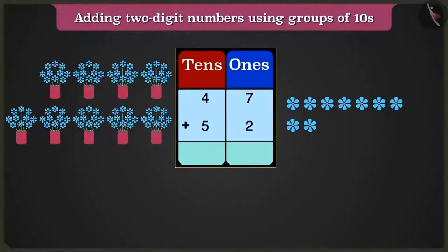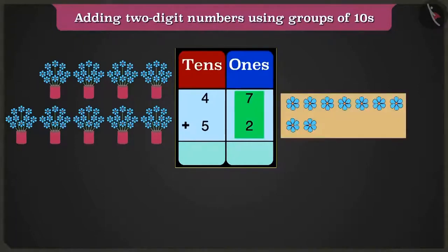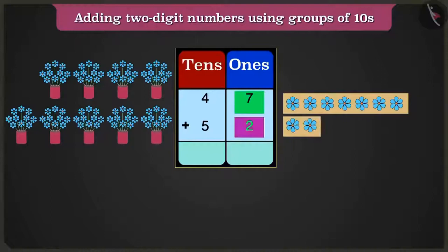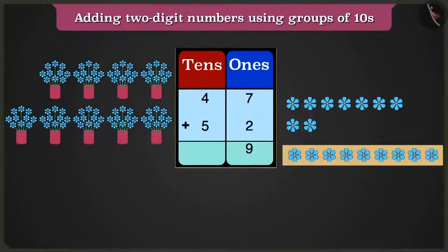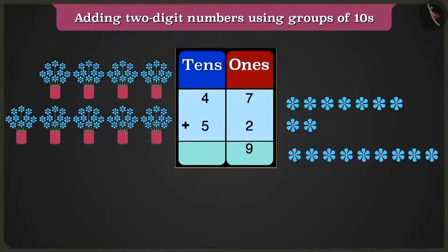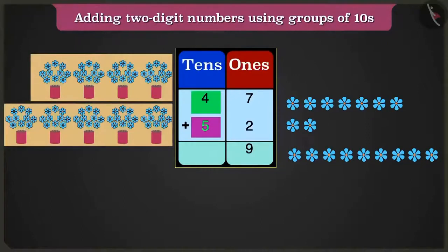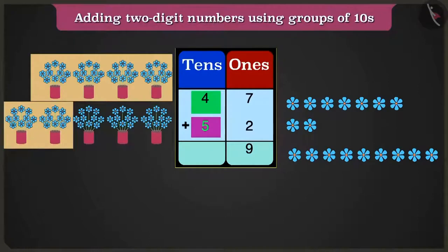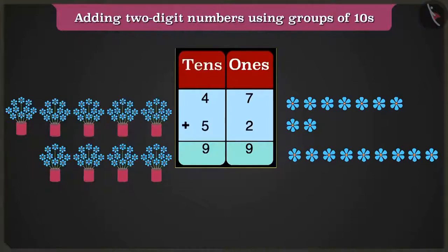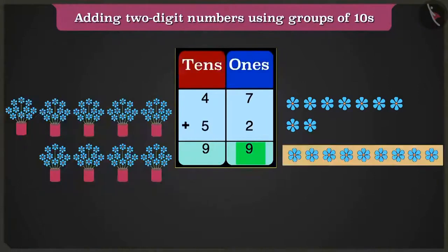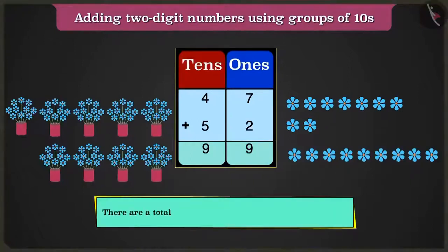Now we will first add the number in the ones box. We have to add seven ones and two ones. The count after seven is eight and nine. That is, seven ones plus two ones equal nine ones. Now in the box of tens, four added to five — count after four: five, six, seven, eight and nine is what we get. Hence, there are nine tens and nine ones. So Bunty and Bubbly's drawing have a total of ninety-nine flowers.